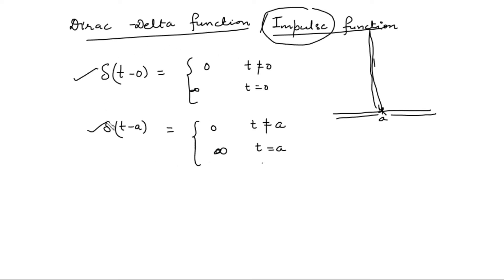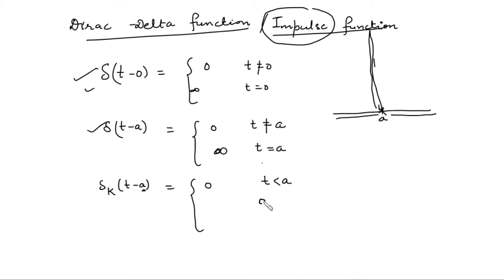Now how to find the Laplace transform of this function? First of all, we define this function in terms of the unit step function, depending on k. Let's define the Dirac delta function at a: before a the value of the function is zero, between a and a plus k the value is one over k, and after a plus k the value is again zero. When you take k tending to zero, at a the value of the function is infinity, and before and after a the value is zero, which gives you the Dirac delta function at a.